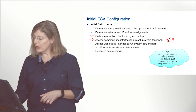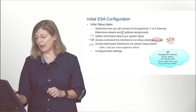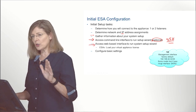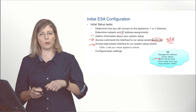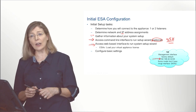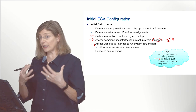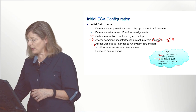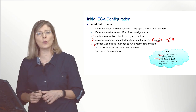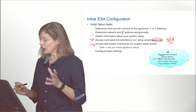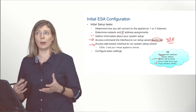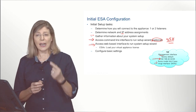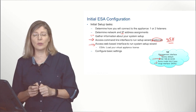Optionally, you can connect straight into the GUI for the first time. When the ESA is shipped from Cisco to your location, it already has a default management address of 192.168.42.42. A small note: some models like the C190 do not have a management interface, in which case you would have to connect using Data port 1.